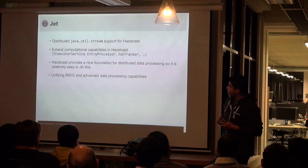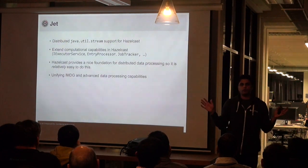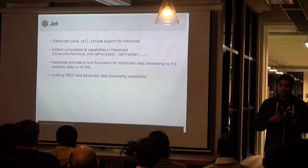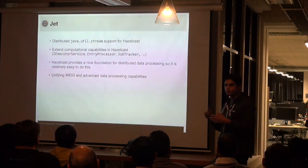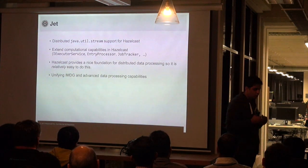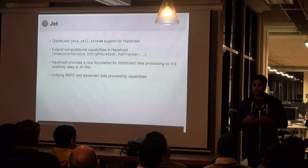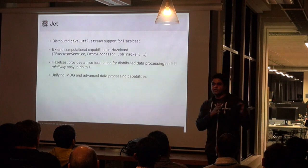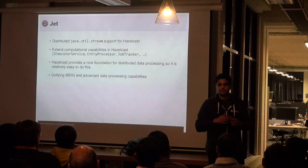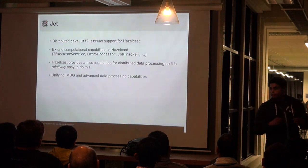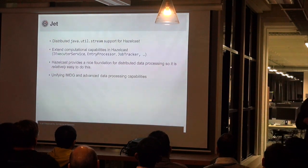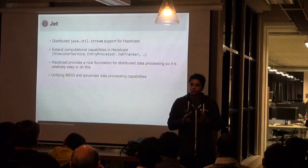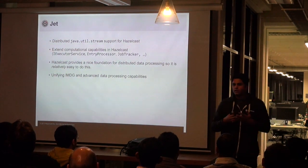At a high level, Jet distributes Java util streams. Those who have used Hazelcast data structures like IMap and IQueue — we have a data structure called IStreamMap, which is an extension of Java util stream. Jet also extends computational capabilities from Hazelcast IMDG — things like IExecutorService, entry processors, MapReduce, and so on. And Jet is built on top of Hazelcast, which provides high availability, consistency, and all those things.